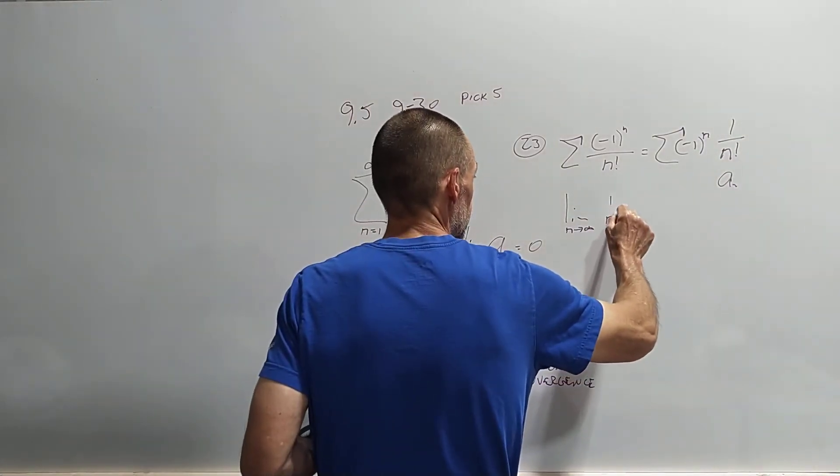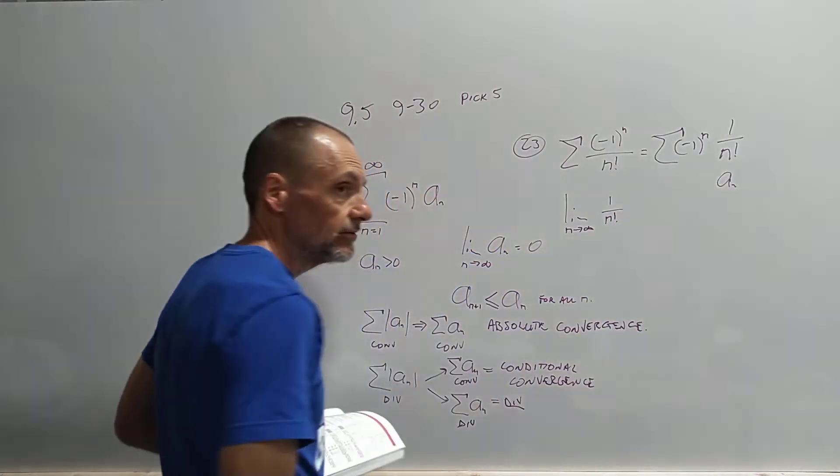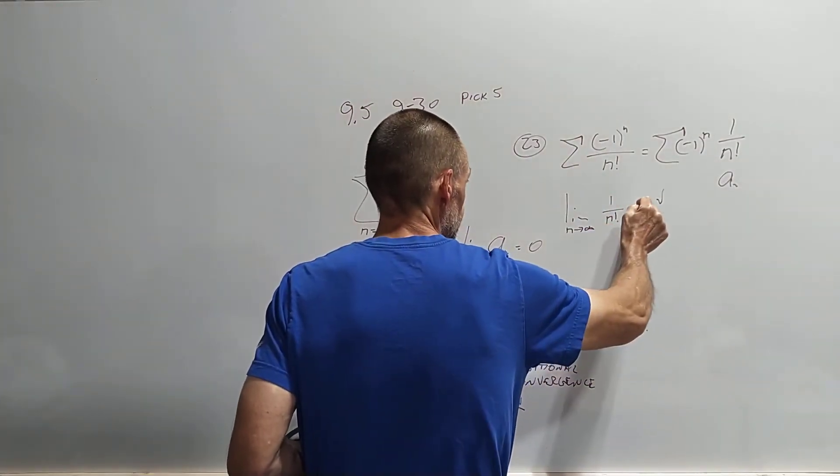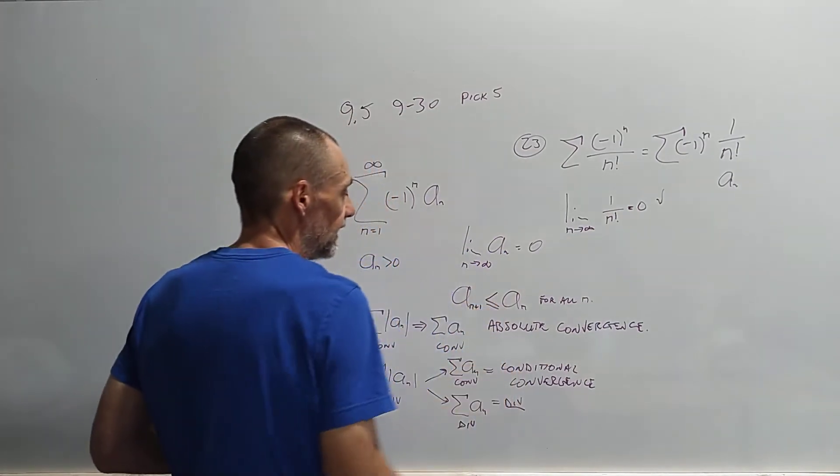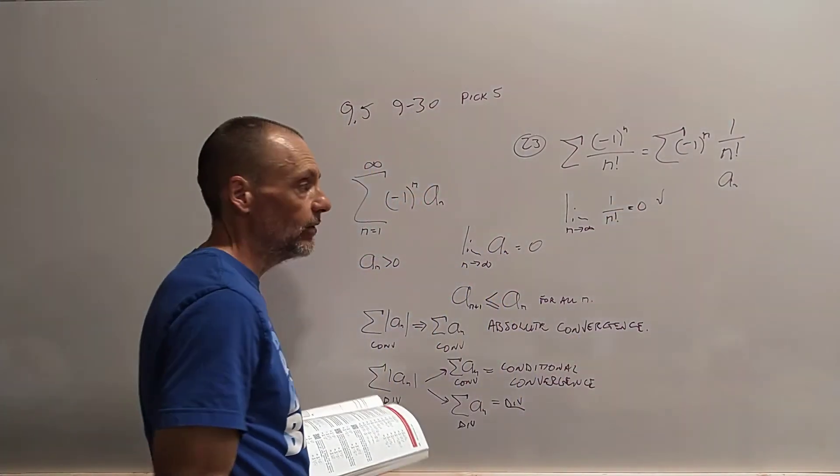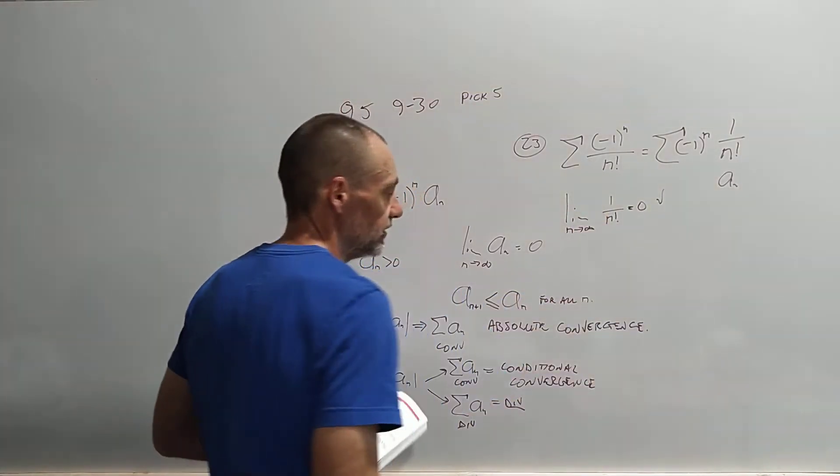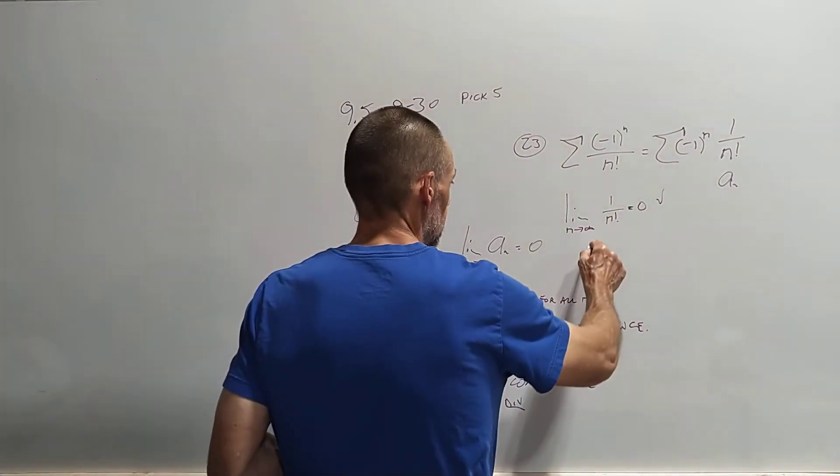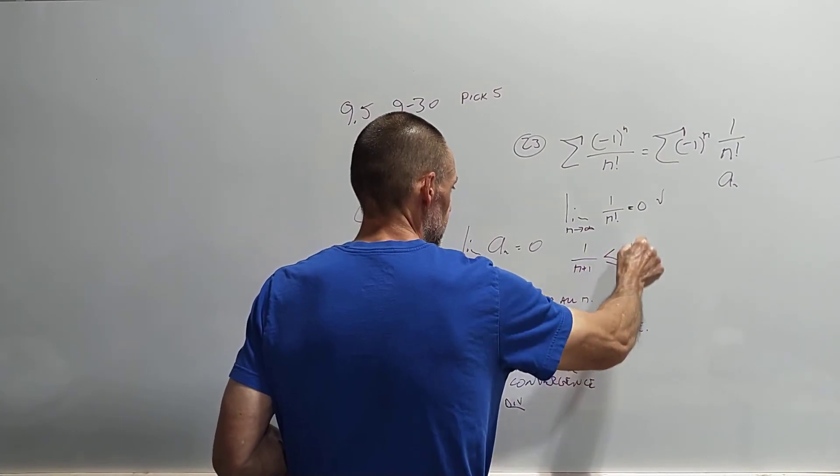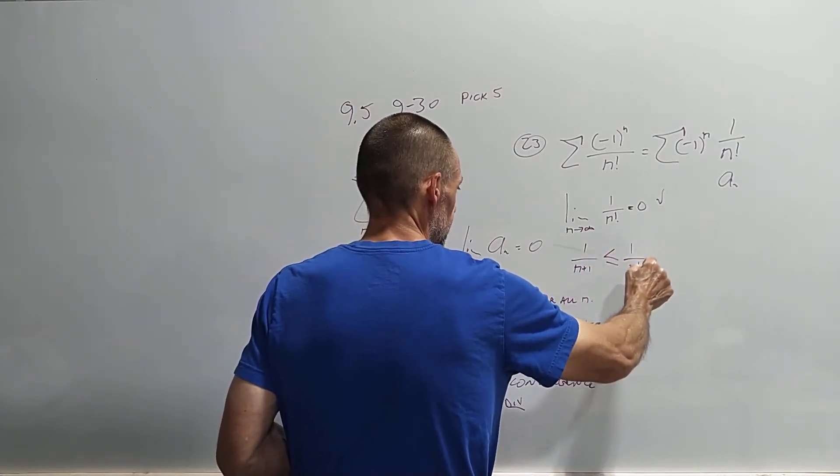And then we have 1 over n factorial. This happens and increases very, very fast, so this goes to 0. So it passes the first requirement. And then is it decreasing? Well, yes, the n factorial is increasing very, very quickly. So 1 over n factorial is definitely decreasing. You can just say 1 over n plus 1 factorial is less than 1 over n factorial.